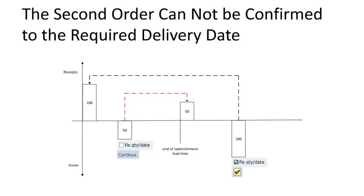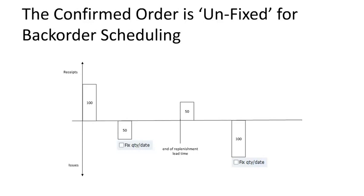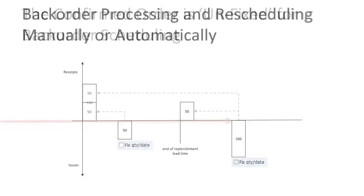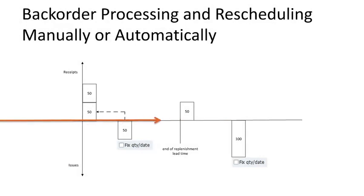Once the planned order is created and we can expect additional product to be received, we can run backorder scheduling to see what we can do to fix the situation. The first action in backorder processing is to unfix the first order. Once both orders are unfixed, backorder processing can now split quantities and assign them to open demand in a way that all requested delivery dates can be met. In our example, backorder processing splits the inventory of 100 pounds and assigns 50 pounds to the second order, so the second order can be confirmed to its requested delivery date.